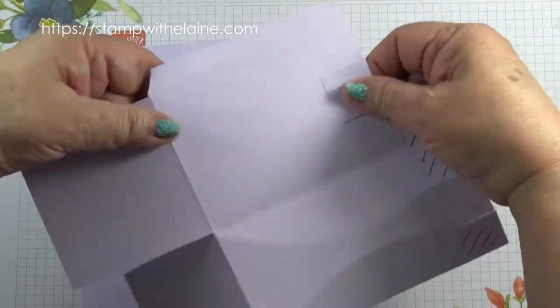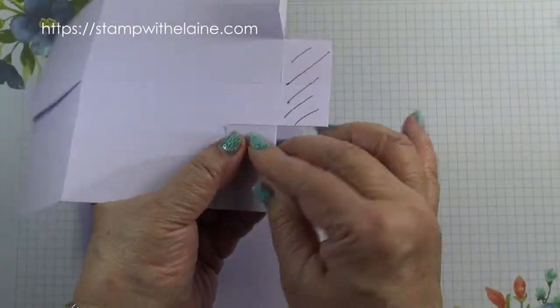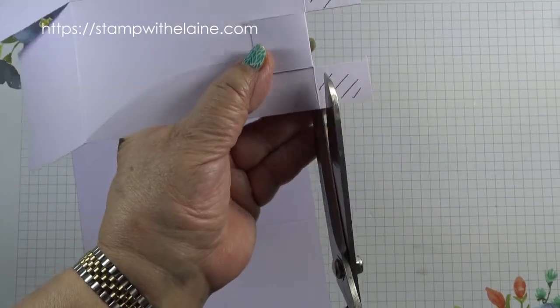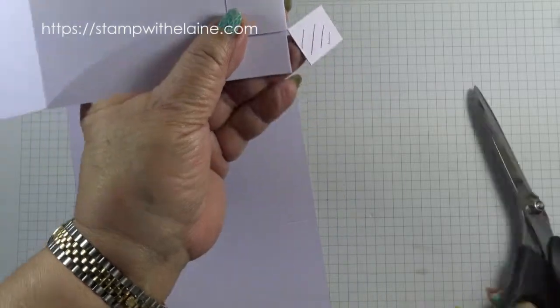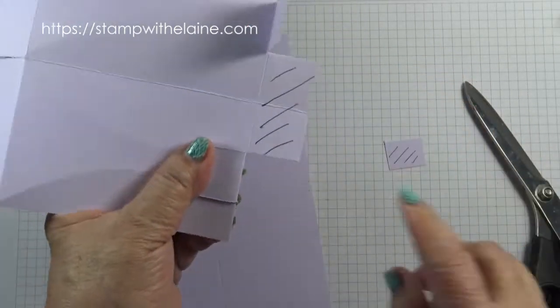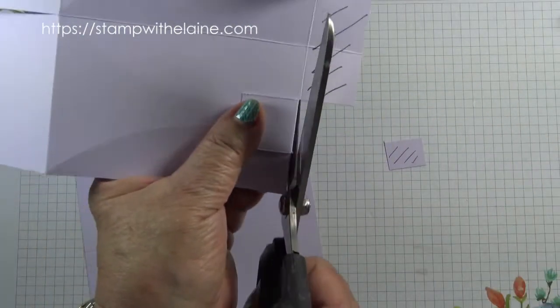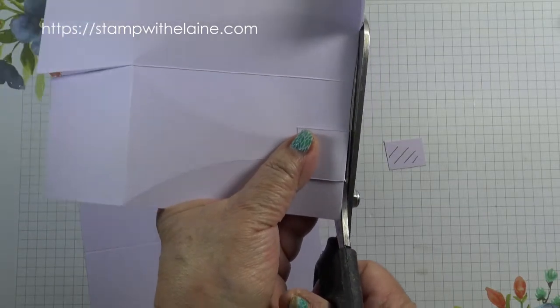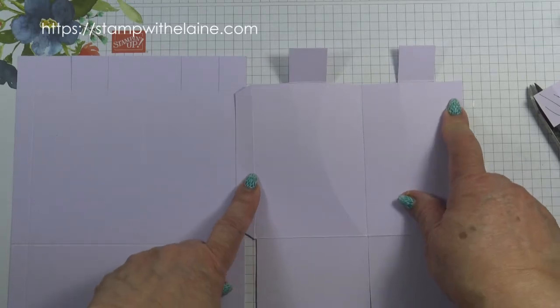Okay, now bend these back. Those are the tabs you want to keep, and you just cut off the bits where the hashed areas are.